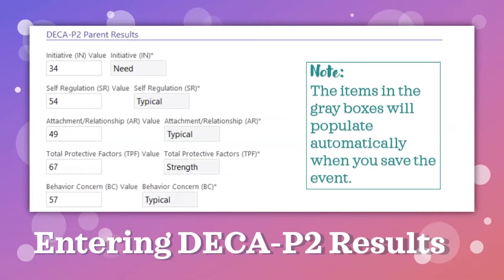Then scroll down to enter the actual scores in the boxes. Below the section for parent results is the section for teacher results. Please enter both sets of results. Do not worry about typing in Need, Typical, or Strength — that will happen automatically when you click the Save button.